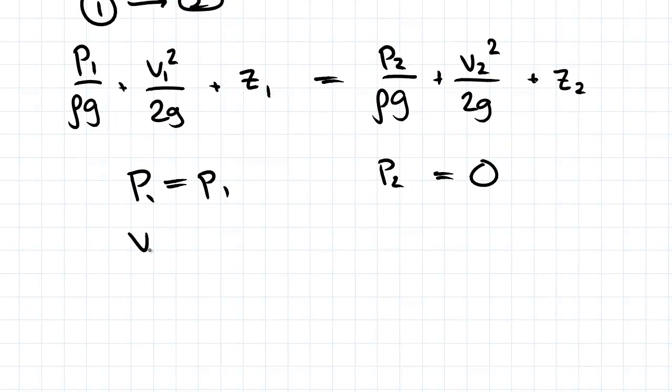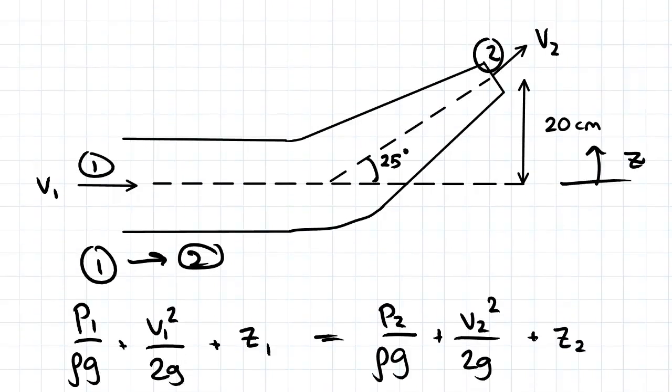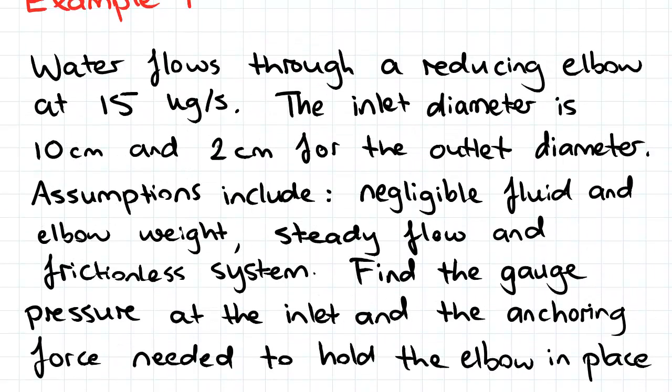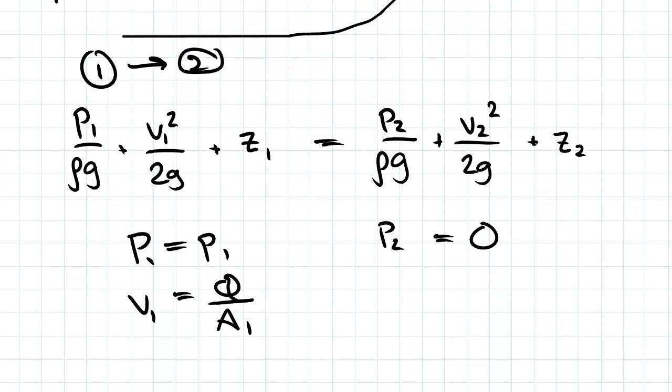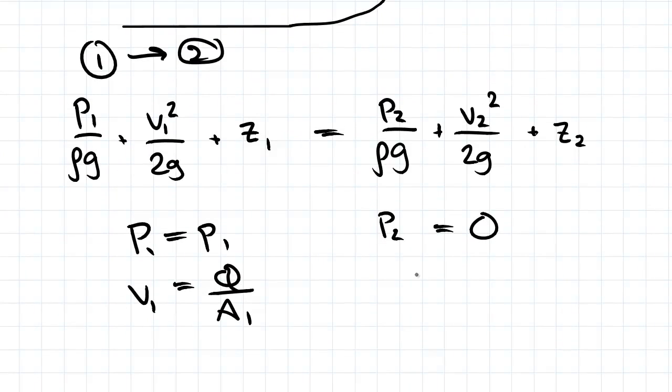Velocity 1 is Q divided by A1. We were given the flow which was 15 kilograms per second. So we're going to have to convert that into meters cubed per second. We know the density of water. So we can get the velocity there. For V2 we can do the same because total inflow equals total outflow.